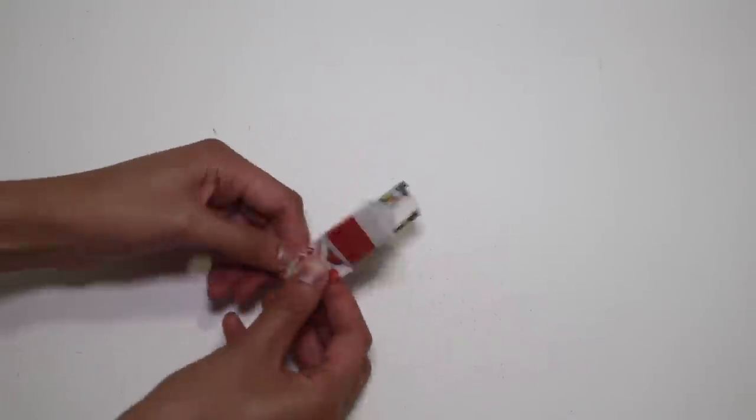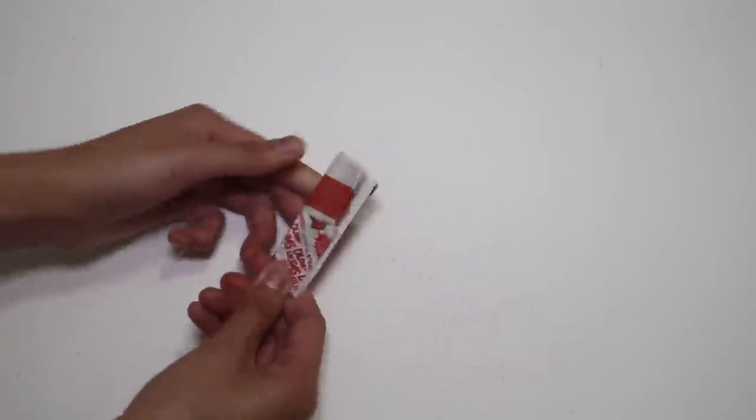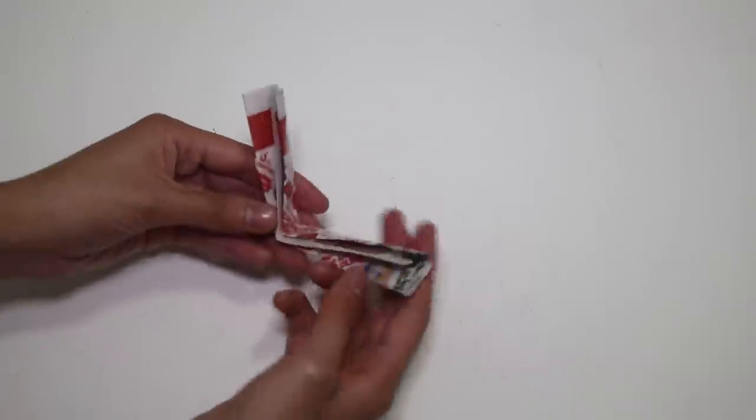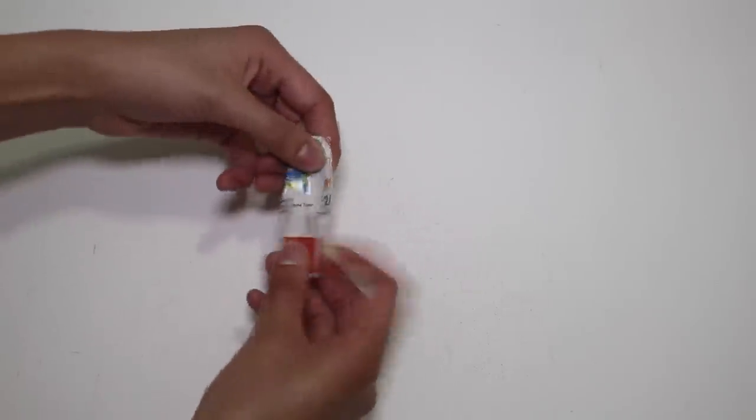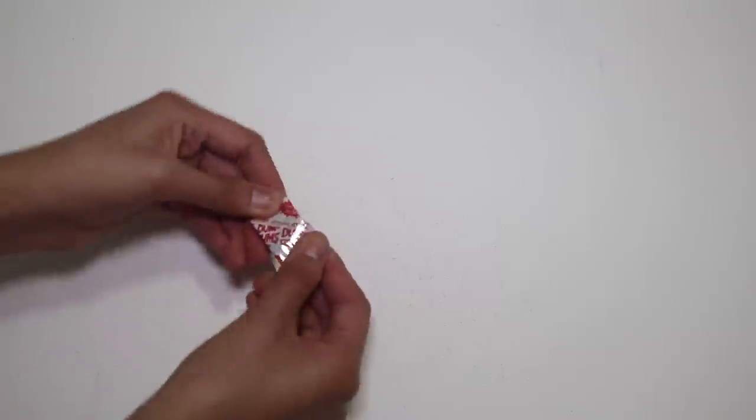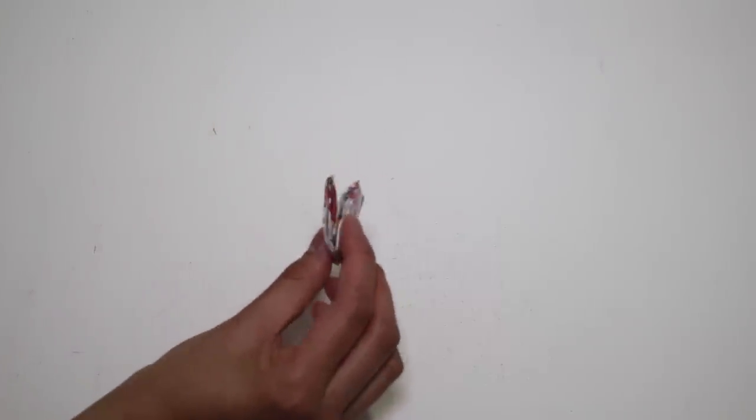Fold that in half so it makes a V shape. Take one half and fold that into the crease, and then take the other half and fold that into the crease as well. Now you're left with a smaller V, and repeat this process with the rest of the candy wrappers.